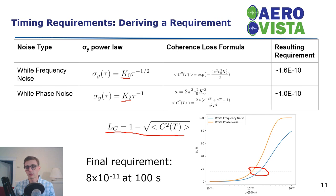In actuality, there's phase loss due to two oscillators, since each spacecraft has its own oscillator that could be wandering independently of each other. Taking that into account, we arrive at a final requirement of 8×10⁻¹¹ at 100 seconds for the Allan deviation, and this is the requirement we use going forward.